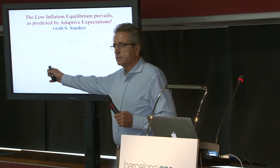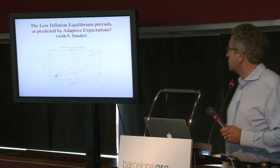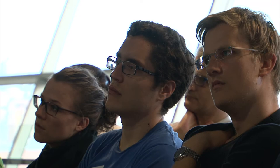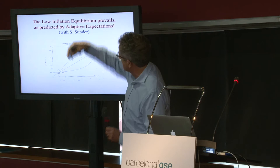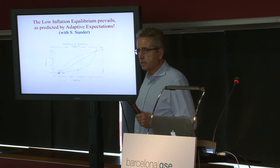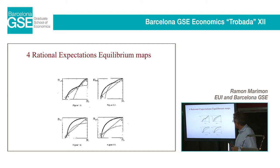Across many experiments, behavior is always concentrated in one region — normalized over lots of experiments, always here. We can use this not only to understand which equilibria are more learnable and more likely to happen, but also to design policies. For instance, the problem was inflation driven by seigniorage. One recommendation is to reduce seigniorage as the ECB does, or to put fiscal constraints on deficits.